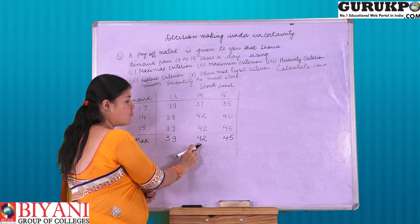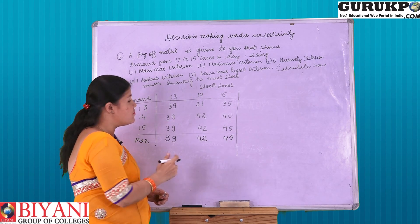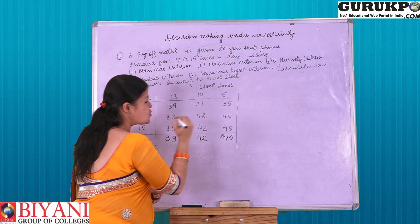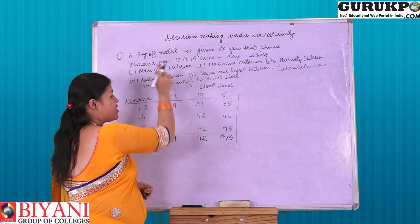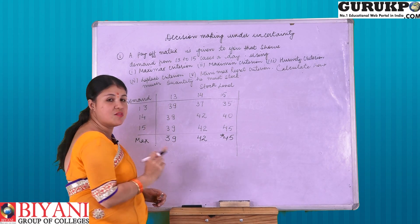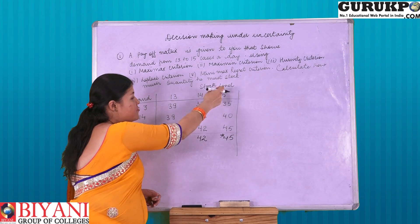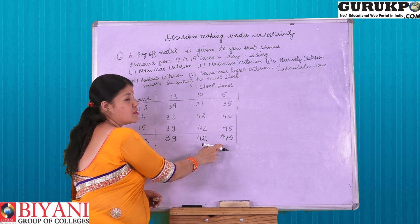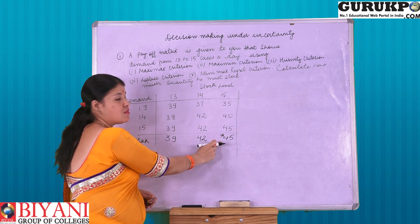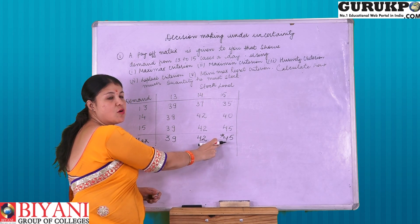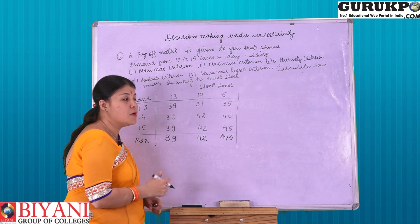From 39, 42, and 45, the maximum value is 45. So, as per Maximax criteria, the decision maker would select stock level 15 in order to gain the maximum profit of 45 rupees.